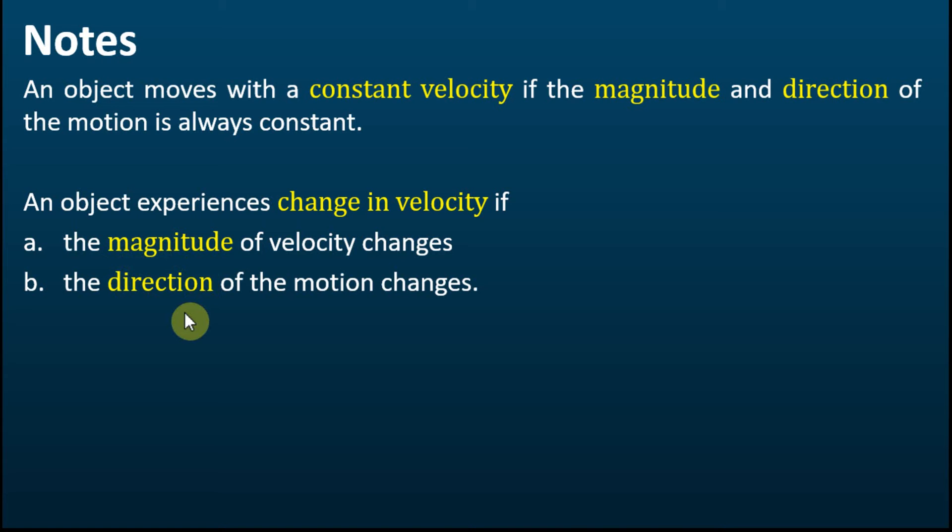So a change in velocity means either a change in the magnitude of the velocity — the object moves faster or slower — or a change in direction, where the speed can remain the same but if the direction changes, the velocity has changed. It can also be a change in both magnitude and direction at the same time. That is what we mean by change in velocity.